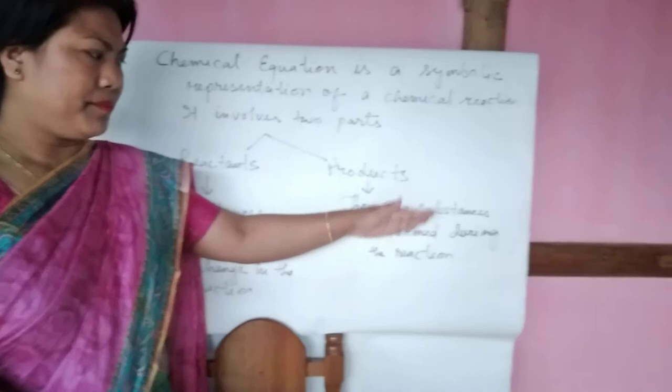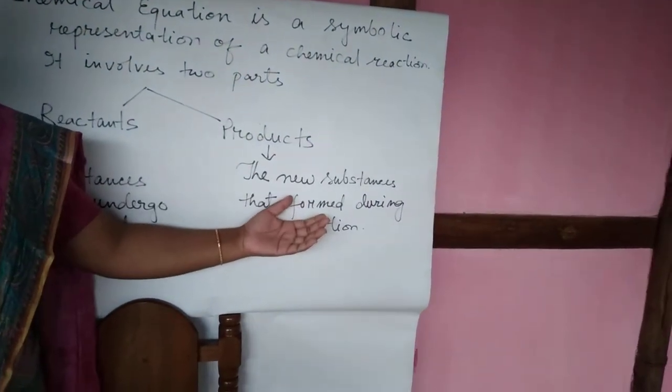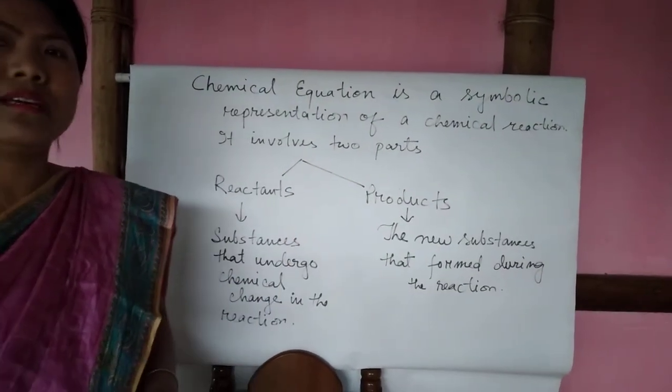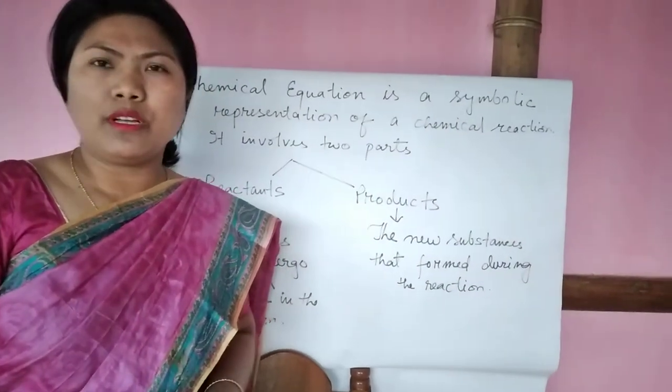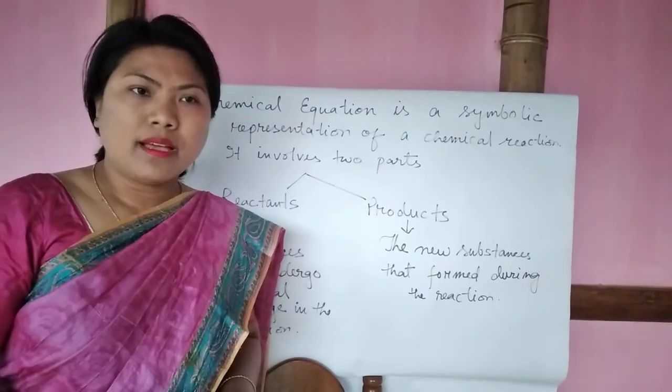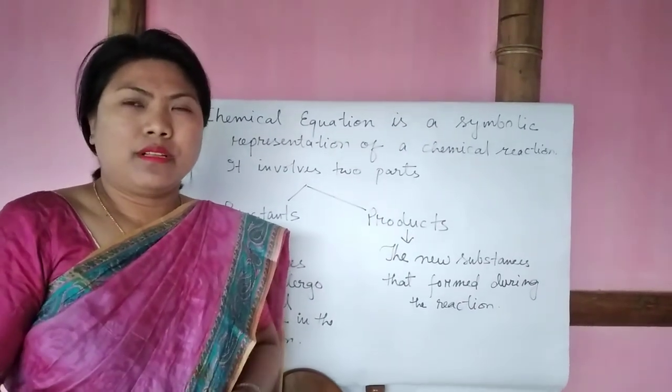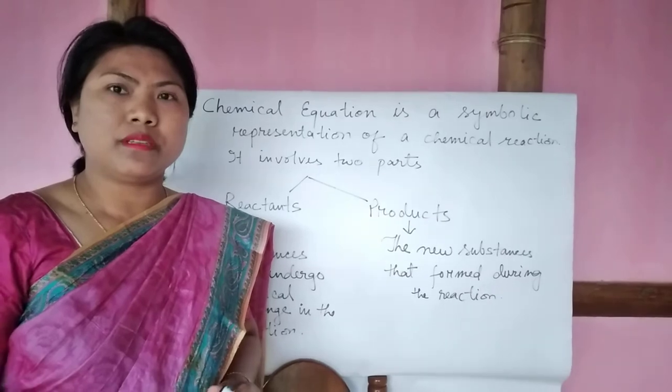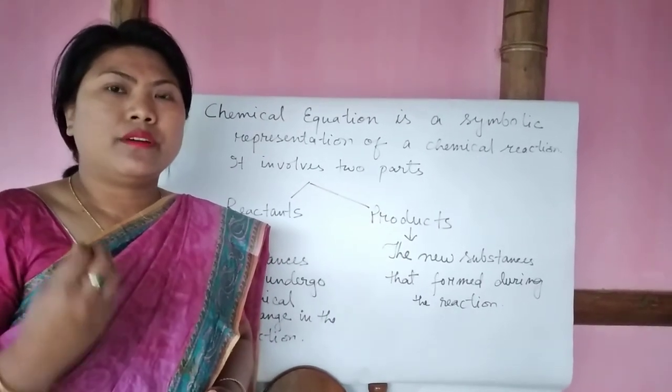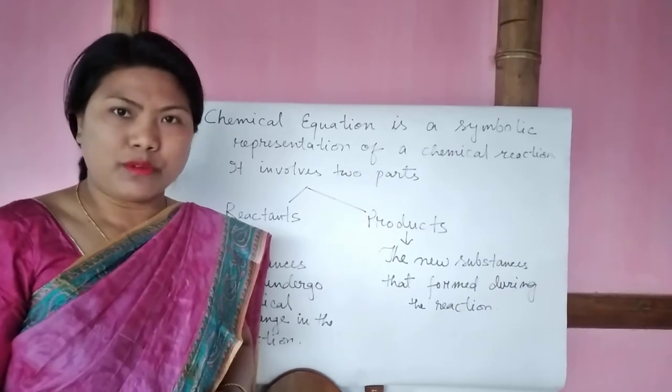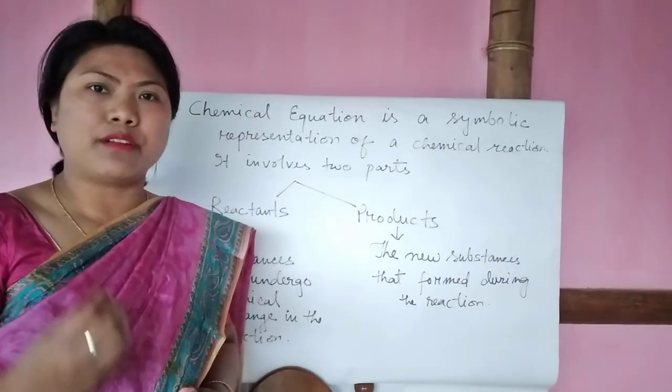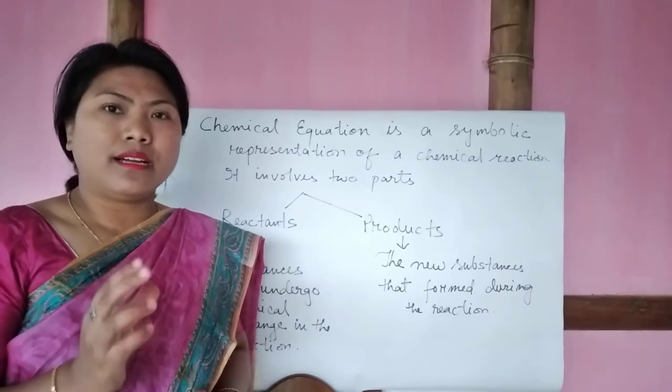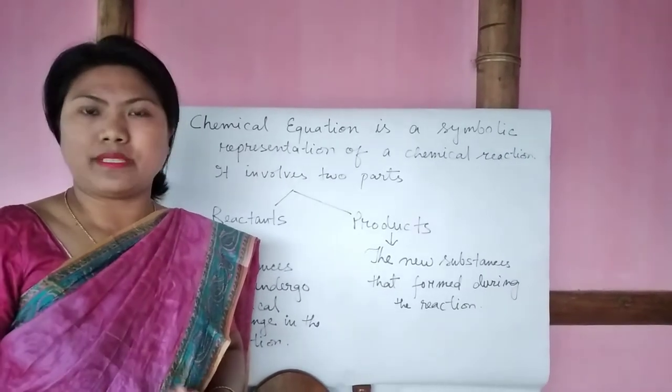Products are written on the right-hand side of the equation. Let me take you one very easy example. In your first activity, Activity 1.1, you will find about magnesium ribbon burning. When you burn magnesium, you will find that a white powdery-like substance will be formed. Magnesium ribbon burns in the air, that means magnesium ribbon reacts with oxygen to form magnesium oxide. That white powdery-like substance, magnesium oxide, is the product you obtain.